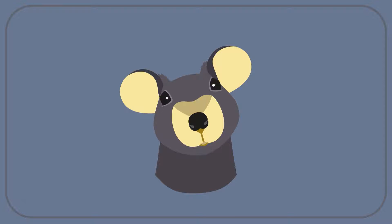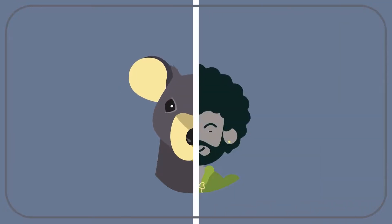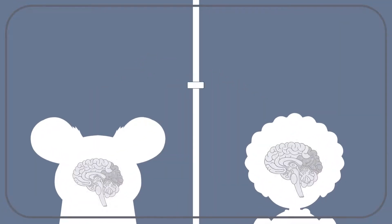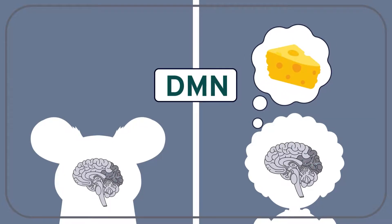Rats and other mammals are good test subjects because they have similar brains to us. For example, the default mode network DMN in the brain, which is involved in daydreaming, is also found active in rats.